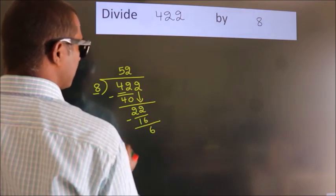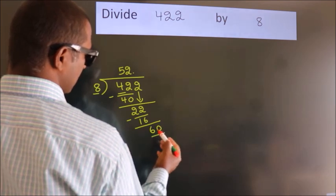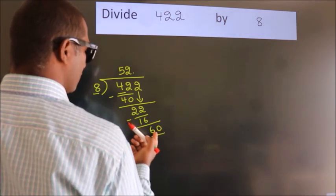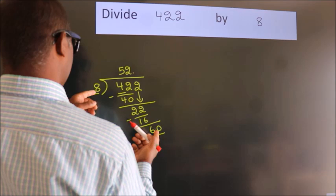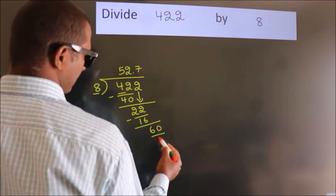So what we do is, we put dot, take 0. So 60. A number close to 60 in the 8 table is 8 sevenths, 56.